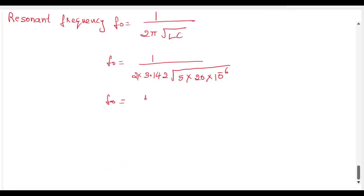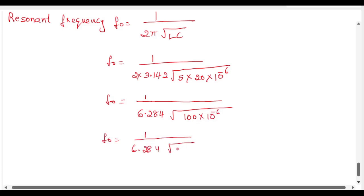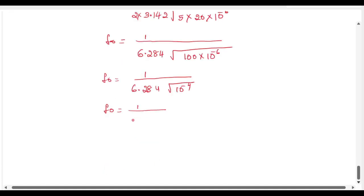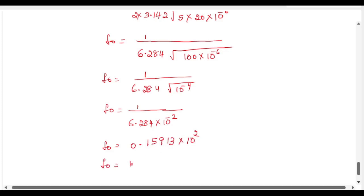So f-naught equal to 1 divided by 6.284 into root of 100 into 10 to the power of minus 6, which is root of 10 to the power of minus 4, equal to 10 to the power of minus 2. So f-naught equal to 1 by 6.284 into 10 to the power of minus 2, which gives 0.15913 into 10 to the power of 2, equal to 15.9 hertz, or approximately 16 hertz. This is the answer for the resonant frequency.